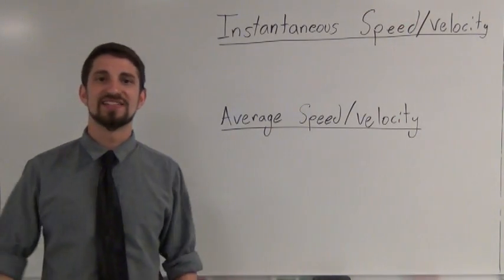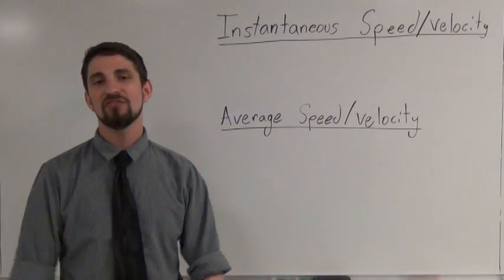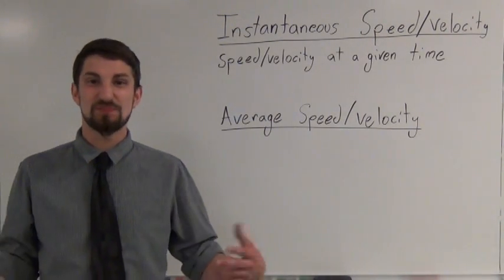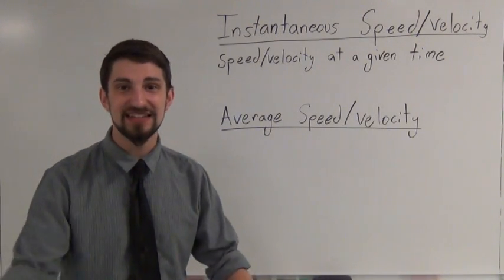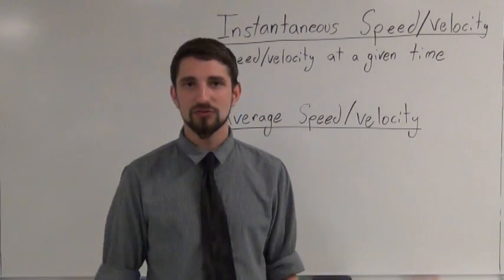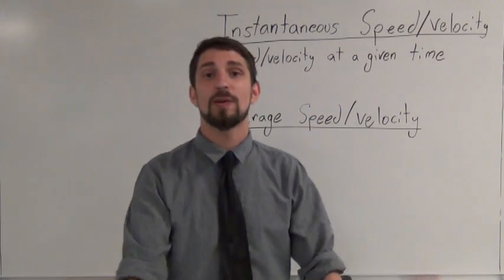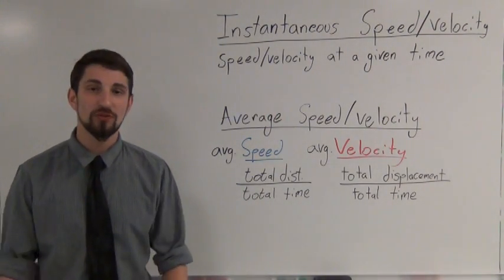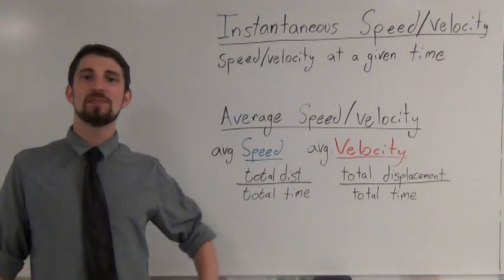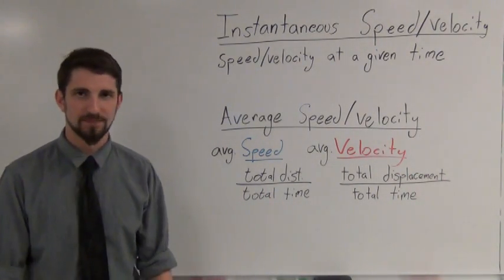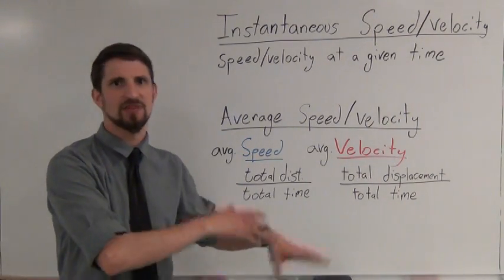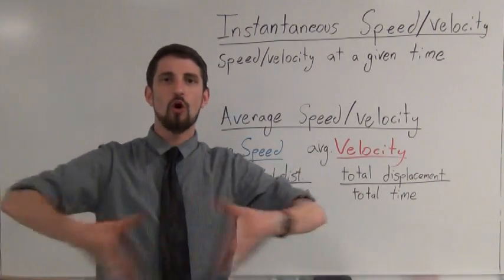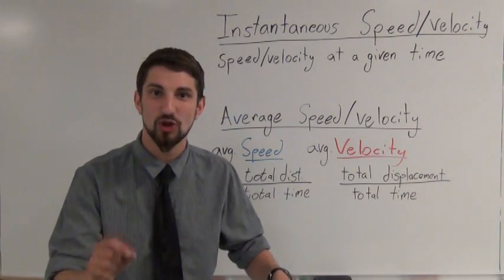We also need to make sure we know the difference between instantaneous and average speed and velocity. Instantaneous speed or velocity is just speed or velocity at that given moment in time. Average speed is total distance over total time, and average velocity is total displacement over total time. We just have to remember that average looks at your whole section, while instantaneous looks at one point in time.